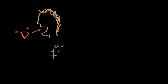D-threose has an aldehyde functional group and it has four carbons, so it's an aldotetrose. You can see that the last chiral center down here has its hydroxyl group on the right side, so it's a D carbohydrate — D-threose.